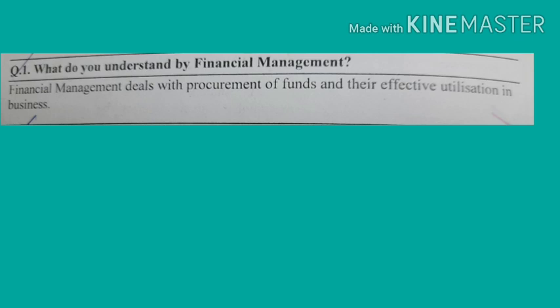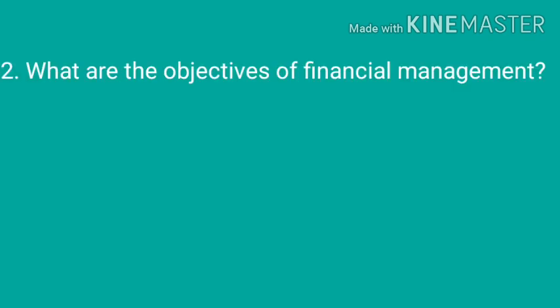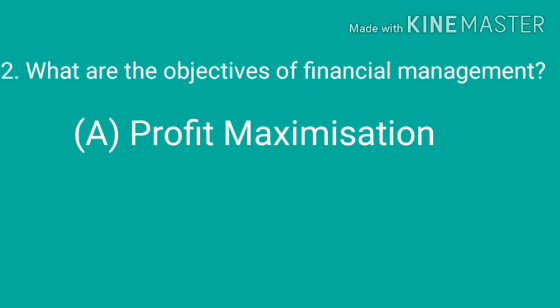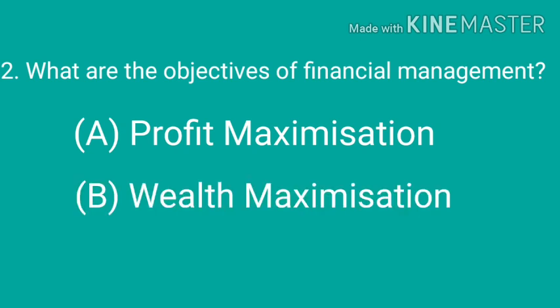He analyzes the financial implications of each decision. The second question is: what are the objectives of financial management? The first objective is profit maximization and the second objective is wealth maximization. Profit maximization means the finance manager has to make decisions in a manner so that the profits of the business are maximized.